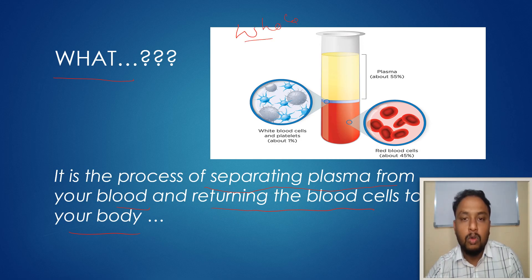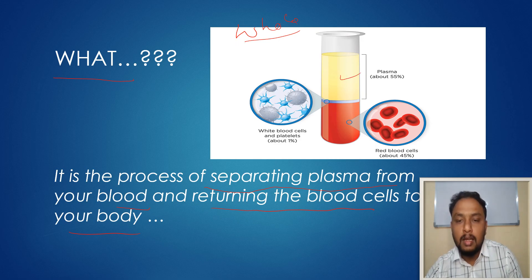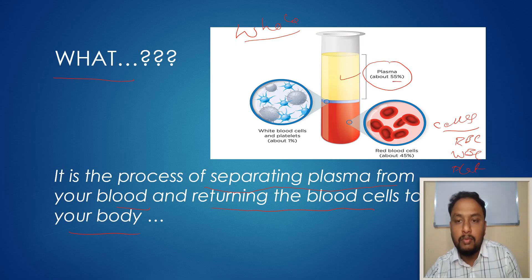In whole blood, blood consists of plasma and cells. The cells are RBCs, WBCs, and platelets. In terms of composition, plasma makes up 55% and the remaining 45% consists of all these cells — RBCs, WBCs, and platelets.